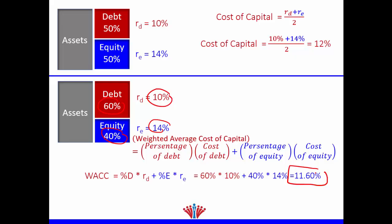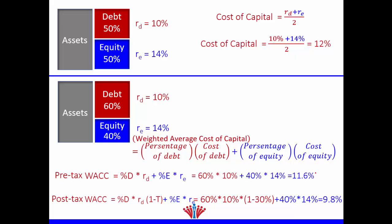Remember that every time a firm uses debt, one of the motives is the tax shield. The tax shield means that when a company uses debt it pays interest, and interest is tax-deductible, so the company pays lower taxes. Therefore, the WACC we just calculated doesn't reflect this tax shield benefit — it's called the pre-tax, or before-tax, WACC. So we need to calculate another WACC called the post-tax, or after-tax, WACC.